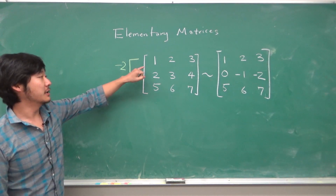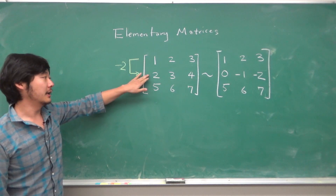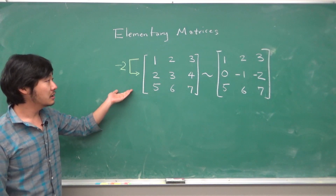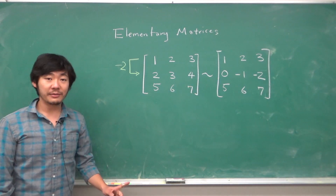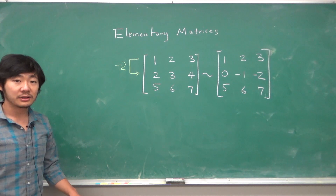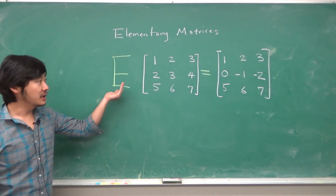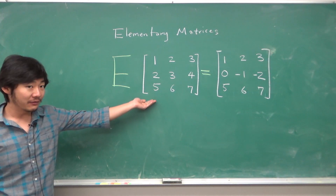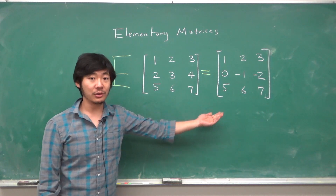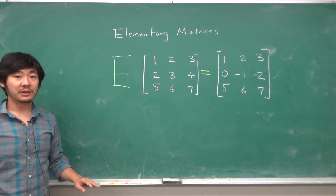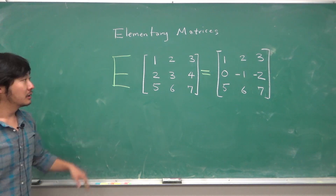Suppose we have this matrix and we want to do an elementary row operation — for instance, taking negative two times the first row and adding it into the second row. When we do that, this will become this matrix. An elementary matrix is a matrix such that if we multiply an elementary matrix E by this matrix, after the matrix multiplication we get the matrix that has had the row operation applied to it. There are three different types of elementary matrices, one for each elementary row operation.